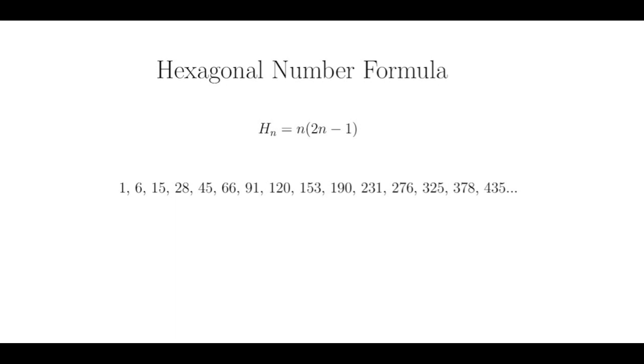As with all other figurate numbers discussed so far, we have an explicit formula for the nth hexagonal number, which I will denote H sub n. H_n equals n times 2n minus 1, which is actually simpler than our other formulas for the pentagonal and triangular numbers. A list of hexagonal numbers is provided below.